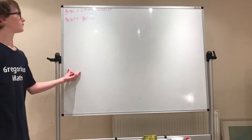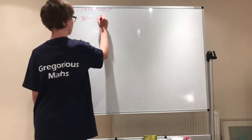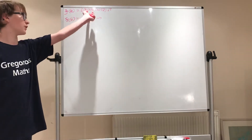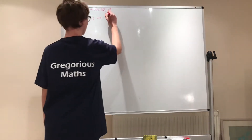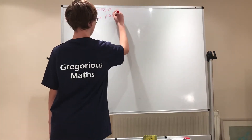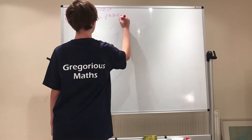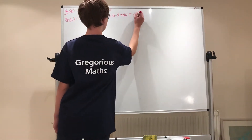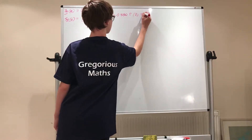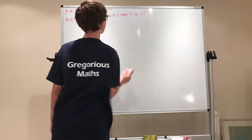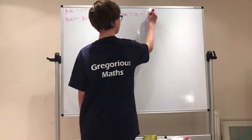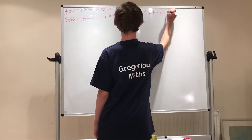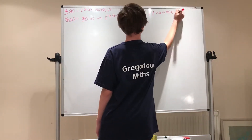So this means that if you plug in (1 minus z) into all of these z's, you're just going to get the same thing. So we get one half z times (z minus 1) times zeta of z times gamma of z over 2 times pi to the negative z over 2, equals one half z times (z minus 1) times zeta of (1 minus z) times...